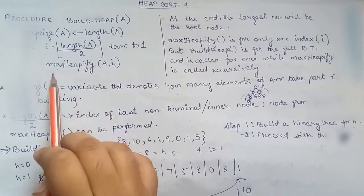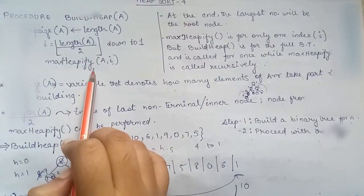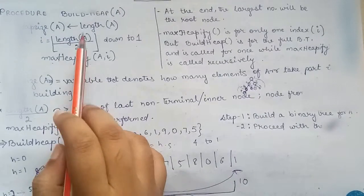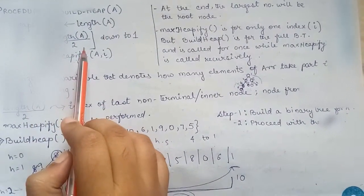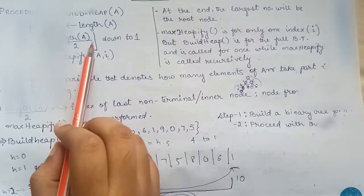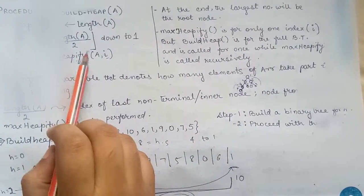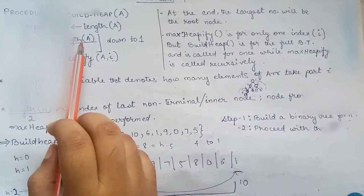This loop is running for n by 2 and the order of max heapify is big O of log n. But the whole procedure has a time complexity in linear time and not big O of n log n.